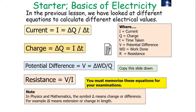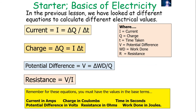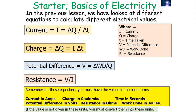You've got to memorise these equations for your examination. Remember to use values in their base units: current in amps, charge in coulombs, time in seconds, potential difference in volts, resistance in ohms, and work done in joules. If a value is not given in these units, you must convert it first — for example, if time is given in minutes, convert it to seconds.